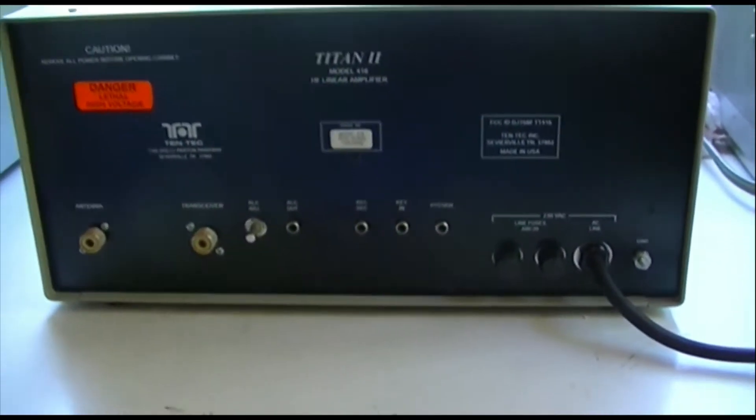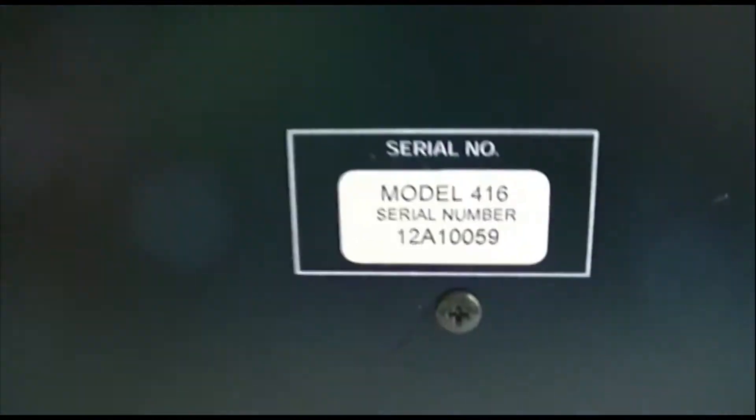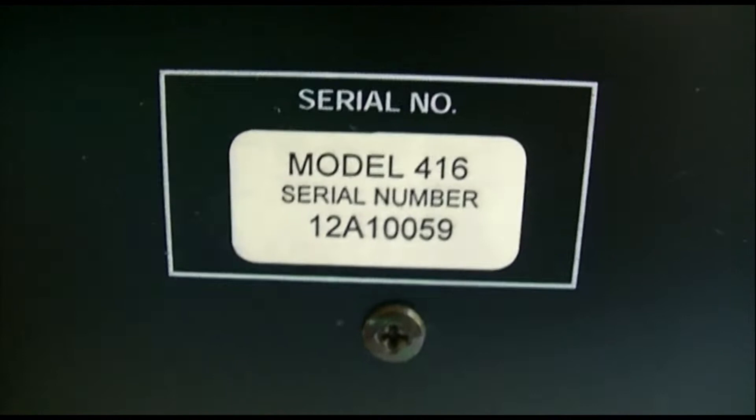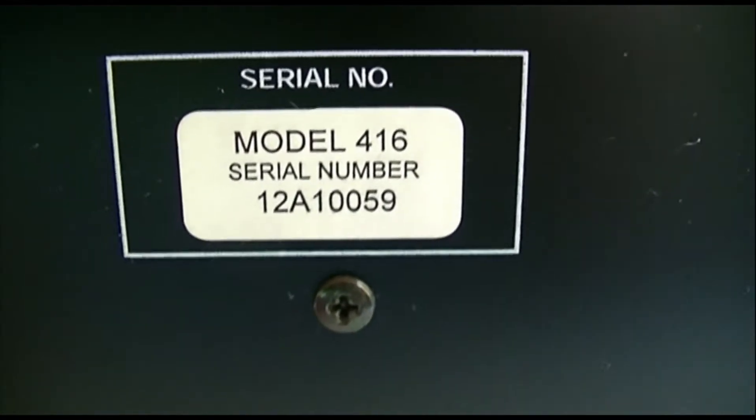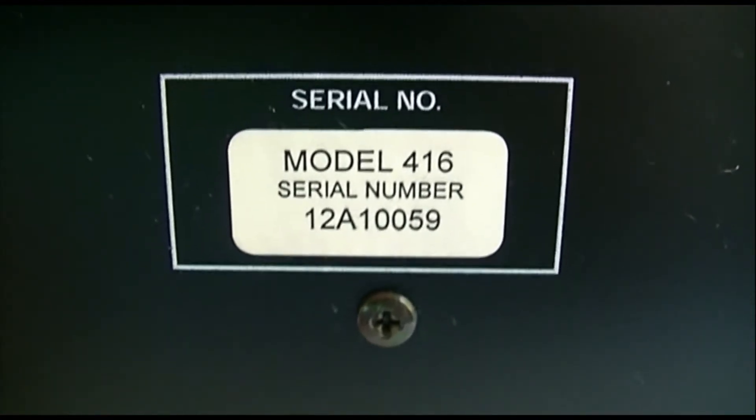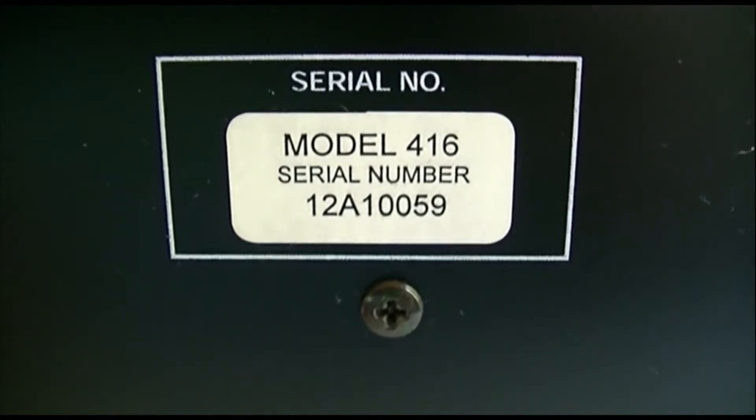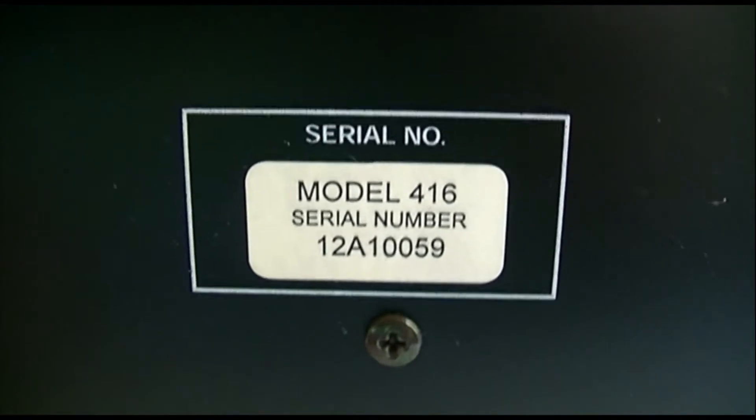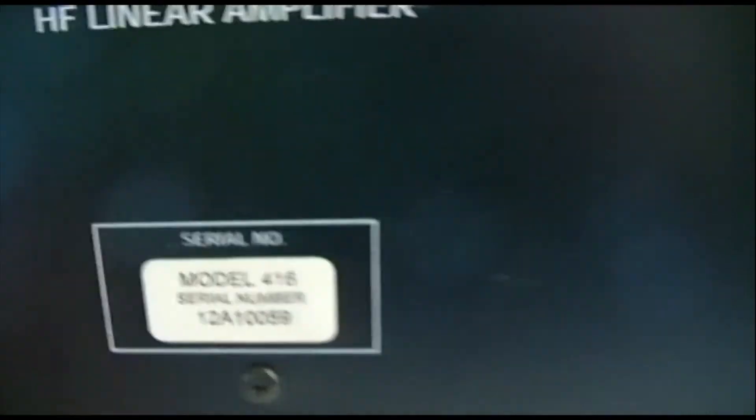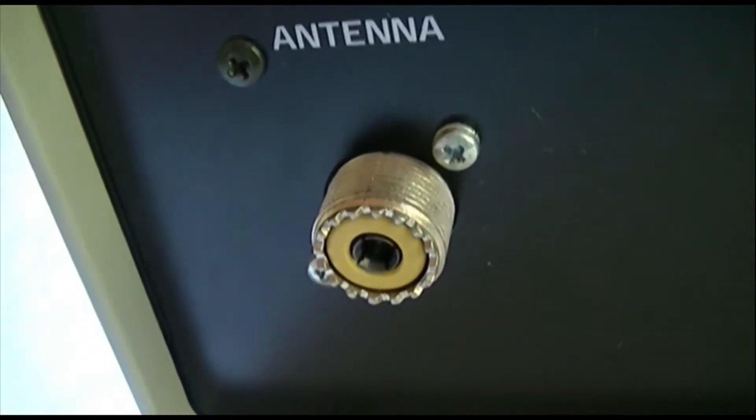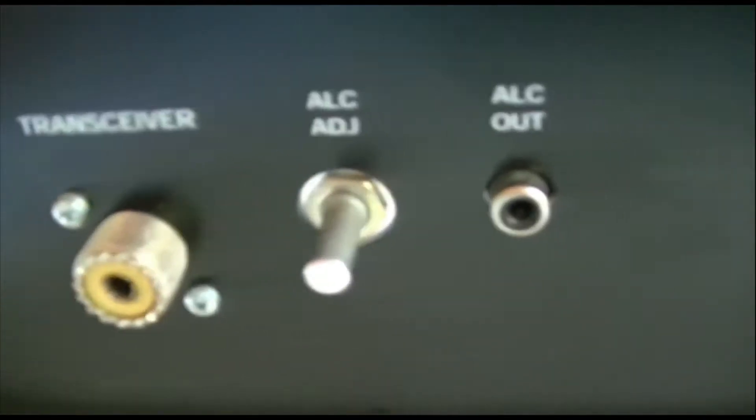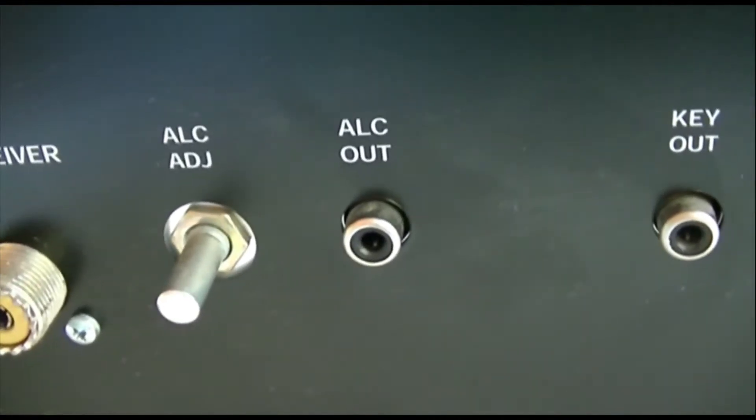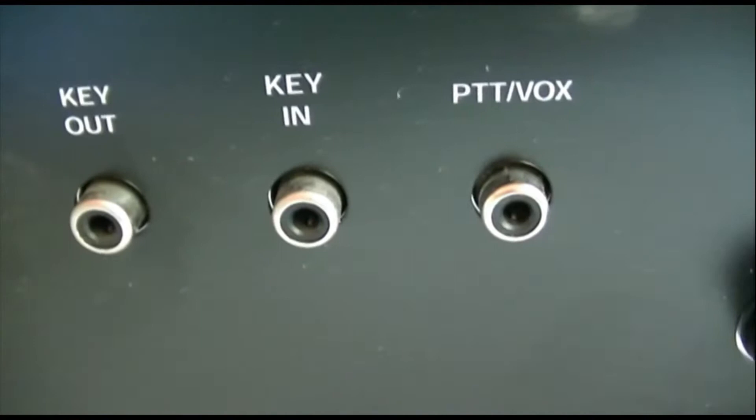So there's the rear panel. Let's go right in here and look at the model 416. Remember this is not a 425, this is a 416 with a single Svetlana tetrode in it. There's the serial number: 12 alpha 159 10059. So I'm going to call Tentec and ask them about any service history on this, production date, see what else we can find. There's the type acceptance for it. Let's look at the connectors on the back. There's the output jack, there's the input, ALC adjust, output for ALC control of your transceiver if it needs it, keying in, keying out, push to talk and VOX.